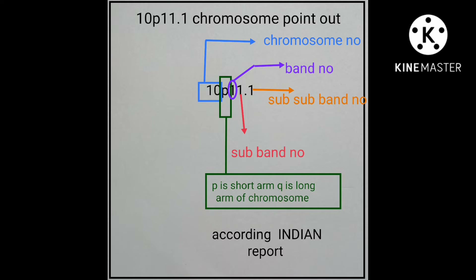That band may have many sub-bands. Identify which sub-band the gene is present in and write that number — if sub-band two, write two; if sub-band one, write one. If there is a sub-sub-band, write that number as well, and indicate the line of numbers.